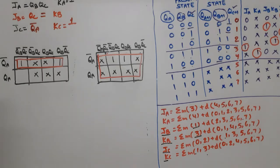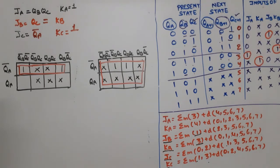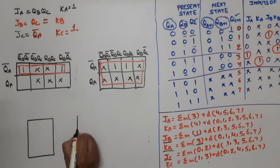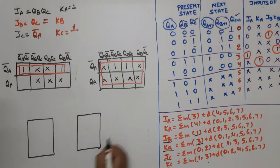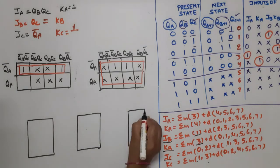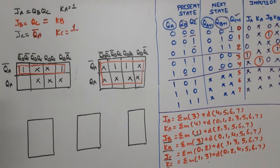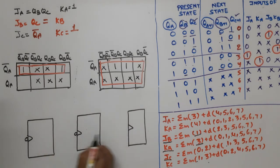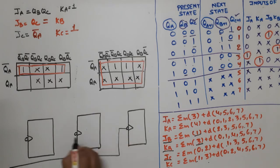We now have all input equations: JA = QB·QC, KA = 1, JB = QC, KB = QC, JC = QA̅, KC = 1. Now we will draw the logic circuit. We require three flip-flops. Remember that the first flip-flop is the LSB (flip-flop C) and the last is the MSB (flip-flop A). Since this is a synchronous counter, the clock is the same for all flip-flops — typically a negative edge trigger.